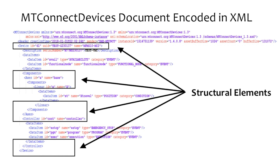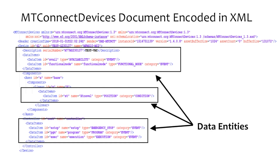In addition to defining the various parts and pieces that describe a piece of equipment, the information model also provides an ontology, or set of rules, that defines the relationship between the various sub-parts of a piece of equipment. The ontology information is a vital component that establishes a standardized approach for manufacturers to describe their equipment, which is fundamental for creating structured data. Data entities are used to describe each piece of data published by the equipment, organized into one of three categories: samples, events, and conditions.